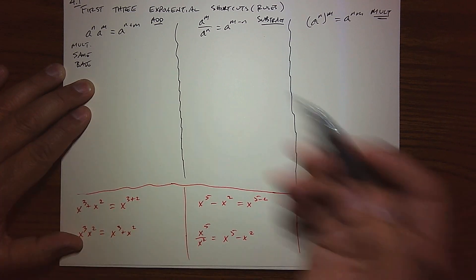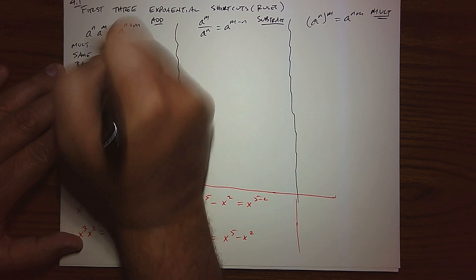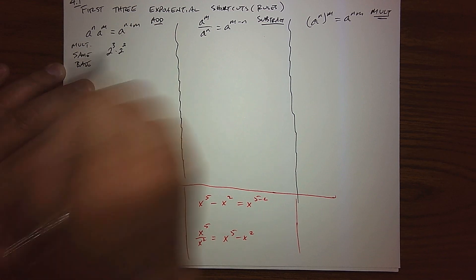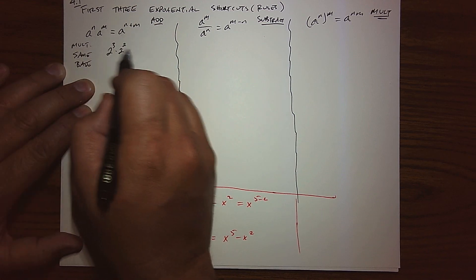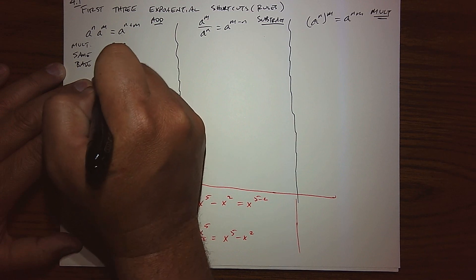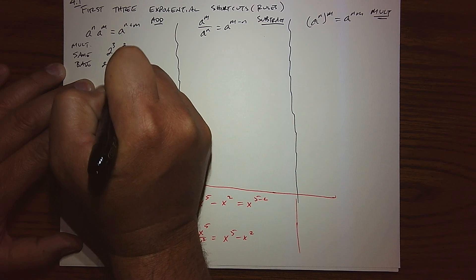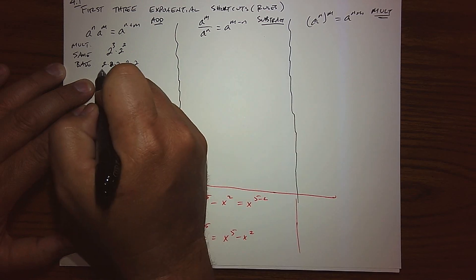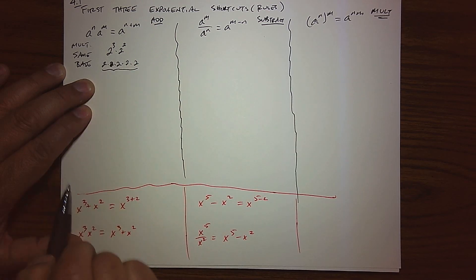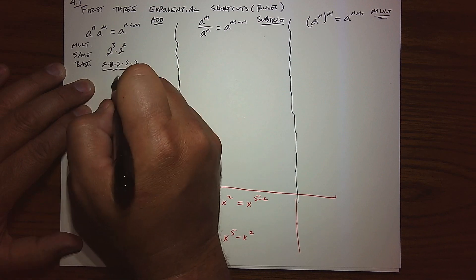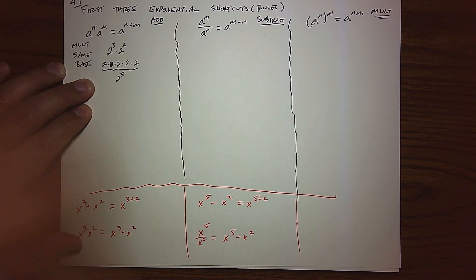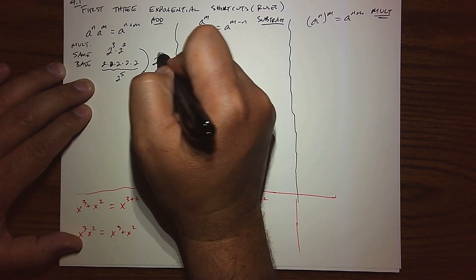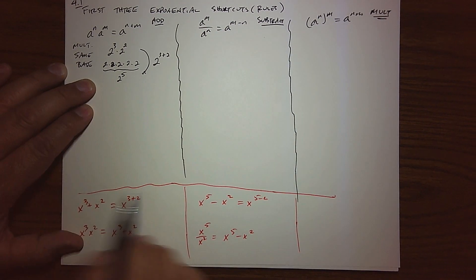So here's a little quasi-proof why that's true. Let's take the number 2 and raise it to the third power, and then multiply it to 2 to the second power. 2 to the third is 2 times 2 times 2, and then we're multiplying it to 2 squared, which is 2 times 2. So you can see, after we expand both expressions out, we're actually multiplying 2 to itself 5 times. So the shortcut is: keep the base and add the exponents, giving us 2 to the fifth power.